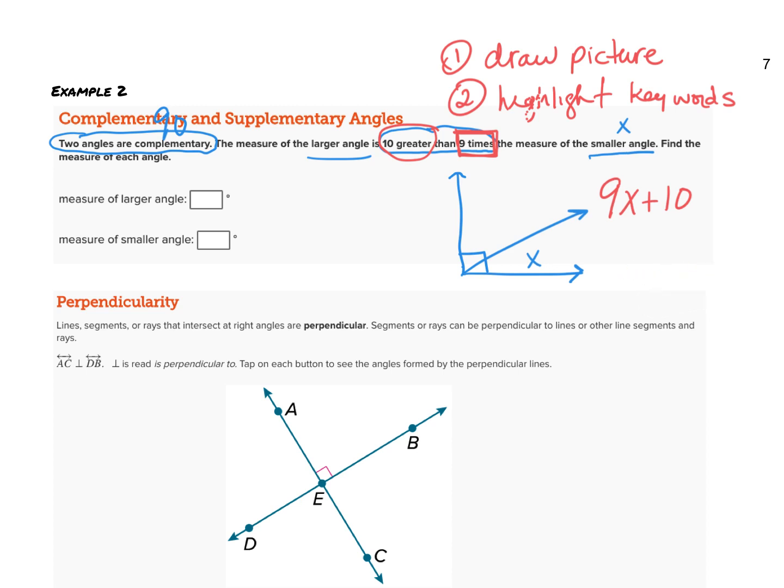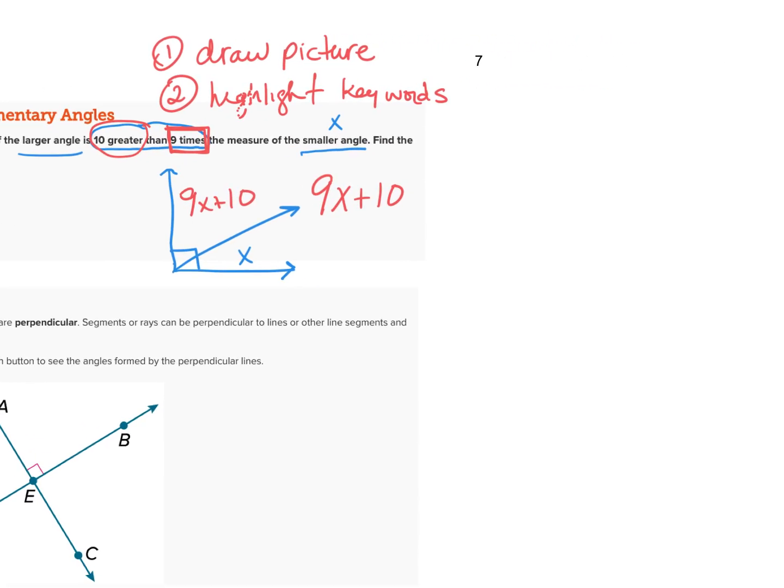I can now solve. I have 9x plus 10 is my first angle, x represents my second angle, and together when I add them up I get 90. From here we just have an algebraic problem. I'm going to combine like terms—I have 9x and x or 1x—it's going to give me 10x plus 10 equals 90. To isolate it, I need to subtract 10 from both sides of my equation and I get 80. My last step is to divide by 10, so x equals 8.